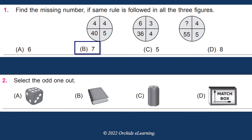Select the odd one out. The answer is C, as all other shapes are rectangular and option C is a cylinder.